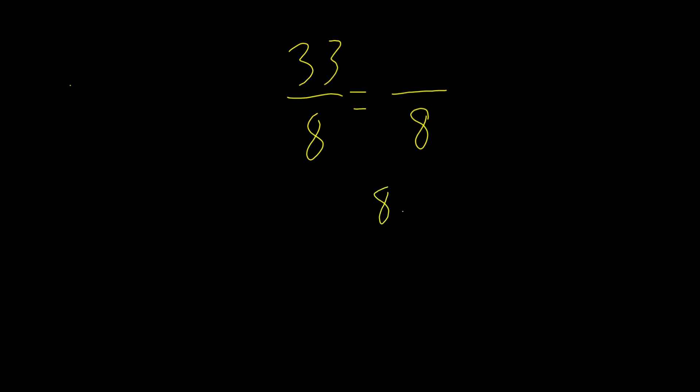Well, 8 times 5 is 40. That's greater than 33. So that wouldn't work out. 8 times 4 is 32. That is less than 33. And that's the greatest amount of times 8 can go into something with it being less than 33.